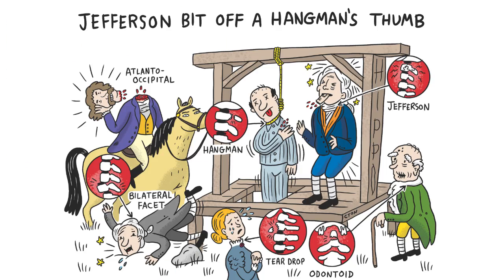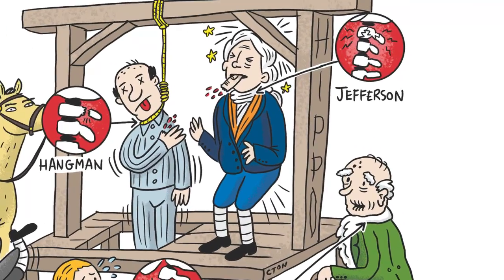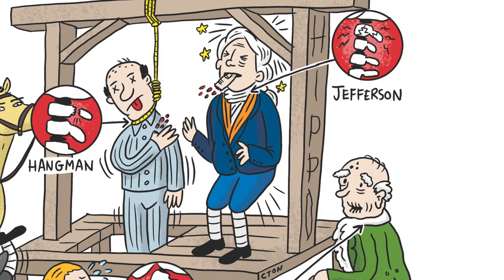Take a look at this image. Jefferson's fracture is a C1 burst fracture, and you can see Thomas Jefferson with an axial compression injury.